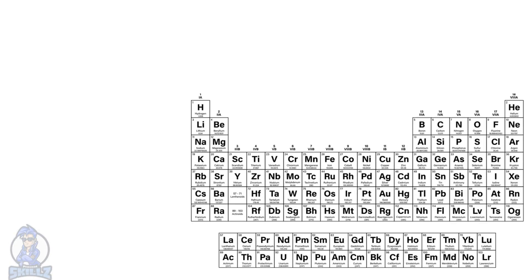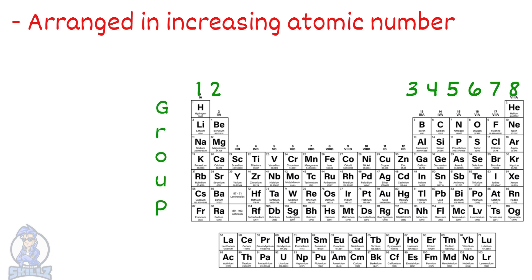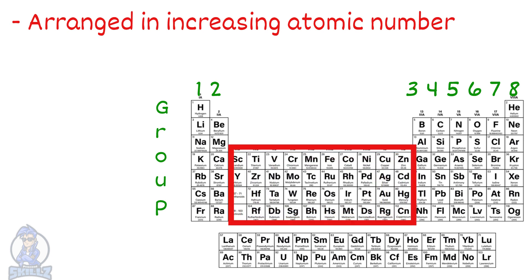Here is a periodic table. The elements in the periodic table are arranged in order of increasing atomic number, that is the number of protons in an atom. The periodic table has columns and rows. The columns are called groups, and they are numbered from 1 to 8. Group 8 is also called group 0. At the IGCSEs we don't usually count the transition metals in the list of groups.